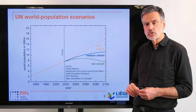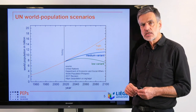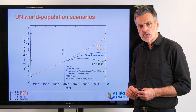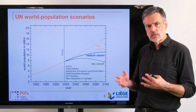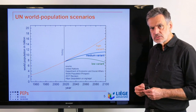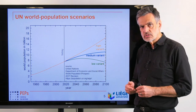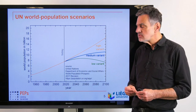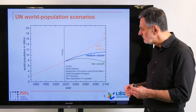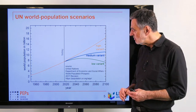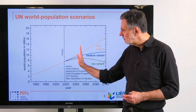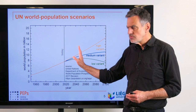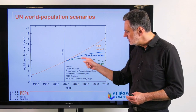The United Nations statistics department publishes world population as a function of time — historical data on one hand, and projections into the future on the other — with a high variant, medium variant, and low variant. The medium variant is evaluated in all detail and is typically assumed to be the most probable value.